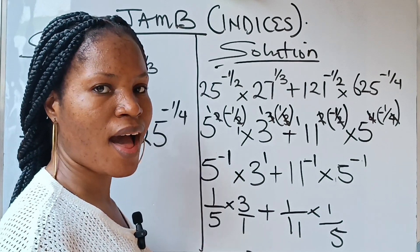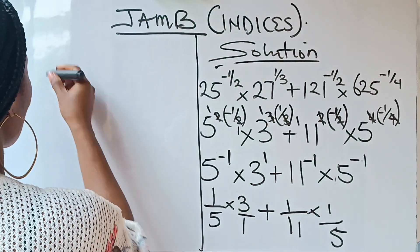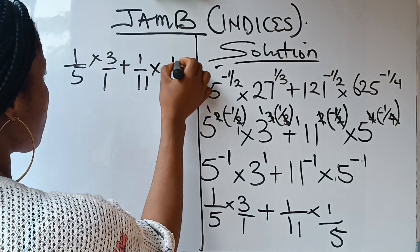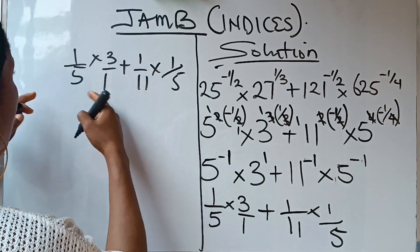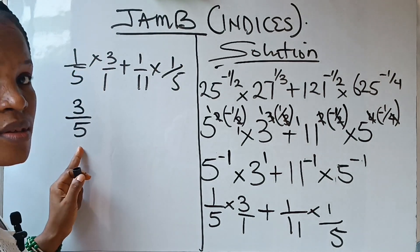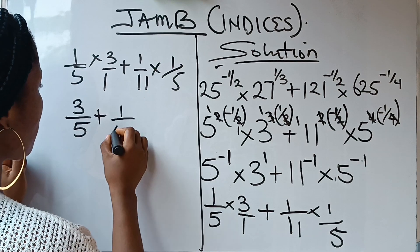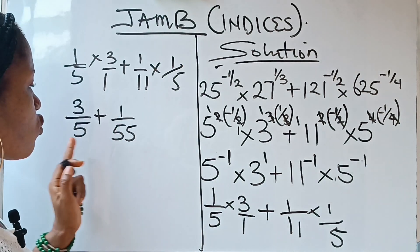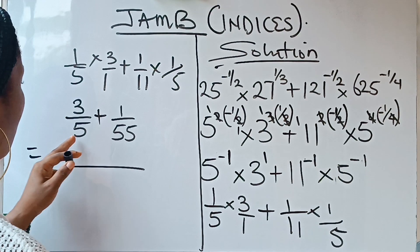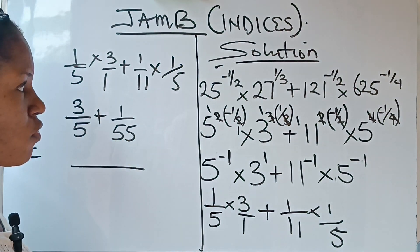So this is what we have: 1 over 5 times 3 over 1, plus 1 over 11 times 1 over 5. Working this out: 1 times 3 over 5 times 1 gives us 3 over 5. Plus 1 times 1 over 11 times 5 gives us 1 over 55. So we are adding two fractions: 3 over 5 plus 1 over 55. The LCM of 5 and 55 is 55.